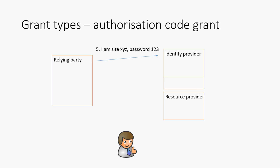Then the relying party authenticates to the identity provider, saying: I've got this code, and I'm now going to prove who I am by providing my client ID and my secret password — usually those are generated by the identity provider. This authentication takes place on another channel; in most cases this would be the server talking to the identity provider in the background. Step six says: I've verified your authentication, I'm happy you are definitely the relying party, so at this stage we can now give a token back.